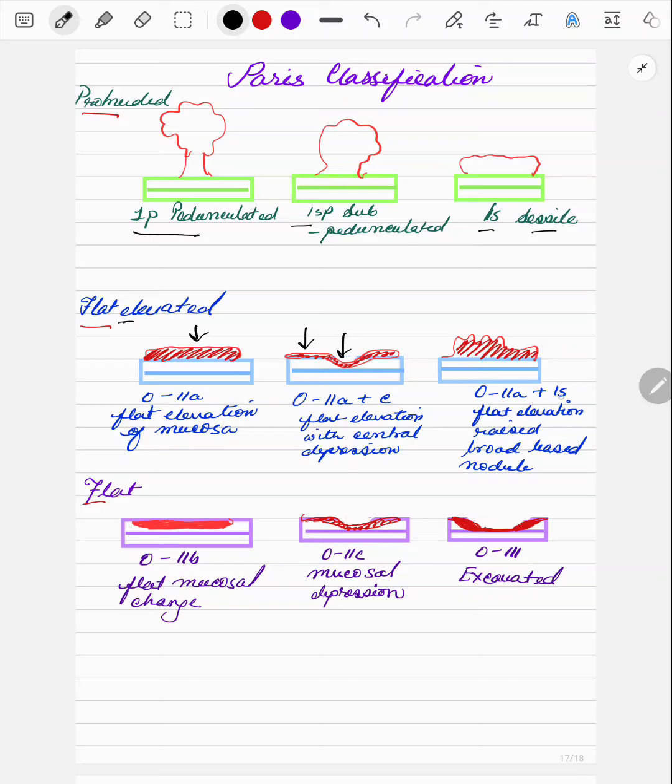The third one is 02A plus 1S. So 1S is the sessile polyp and 02A is the flat elevation.